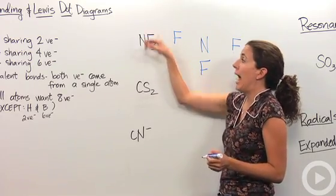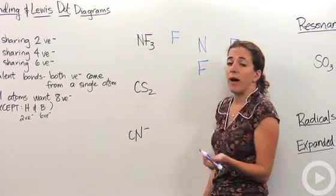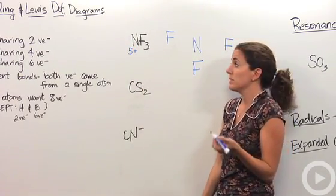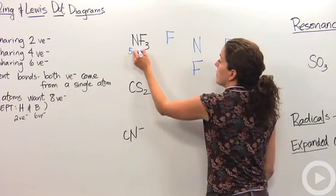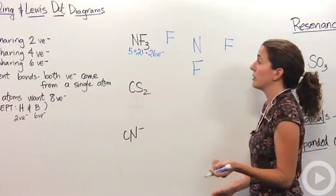Okay, the next thing we're going to do is we're going to say, how many electrons are we working with in this particular compound? Well, nitrogen's in group five, so it has five. Fluorine's in group seven, there's three of them. So it's seven times three, which is 21. So we have 26 electrons that we're working with in this whole molecule.